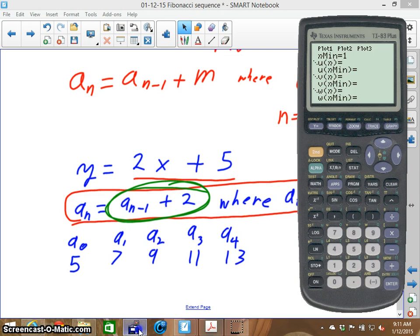Now instead of A sub N minus 1, I'm going to put U sub N minus 1. And to put U, I have to use second 7. Second 7 is the actual key for this particular thing, because this is the way it works.